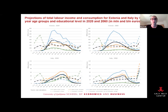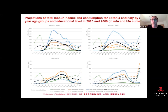This shows how we projected the total labor income and consumption for Estonia and Italy as examples. Estonia showed the smallest differences and Italy was one of the countries showing the most differences. For Estonia, all the income and consumption lines were a bit more smoothed. For Italy, you can see a big change in total income: in 2020 most of the income was coming from secondary education, whereas by 2060 it is expected that most of the income will come from post-secondary education.